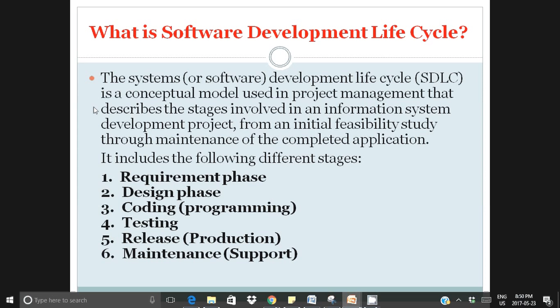Once the application is tested and programmers and testers say it's all good, it goes to the next level — that's called production, it goes live. For example, when Gmail is done, they release it to the public for people to use. When development and testing are done, the next phase is production. When the application is live and people are using it, if there are any issues, a maintenance and support team looks after them. These are the phases in the Software Development Lifecycle.